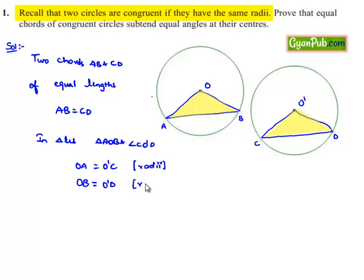Since the figures are congruent, their radii will be equal, and also initially it was given that chords are of equal length, therefore AB is equal to CD.